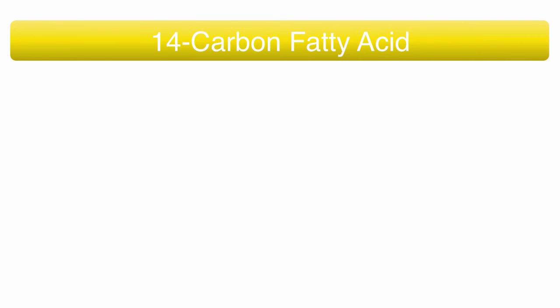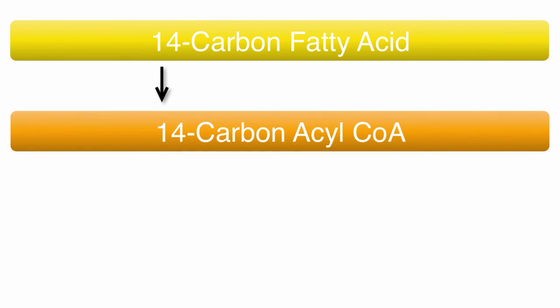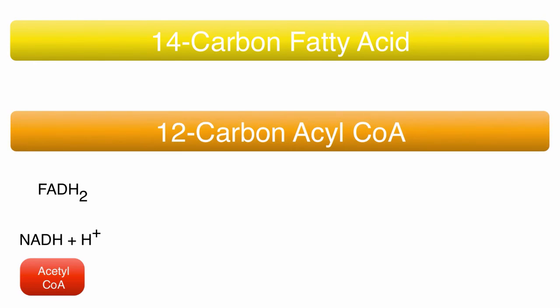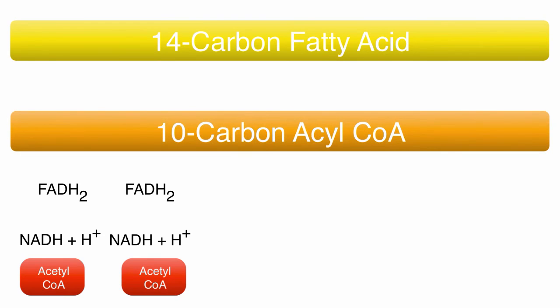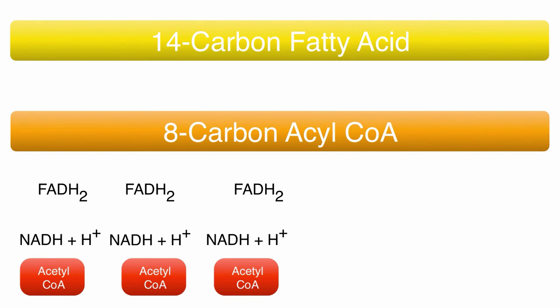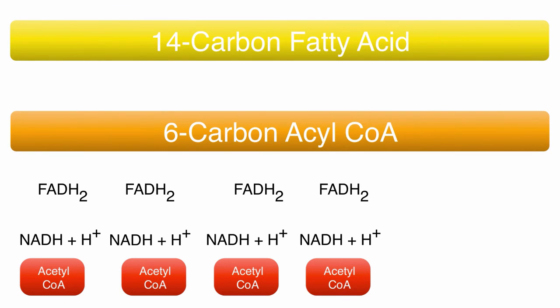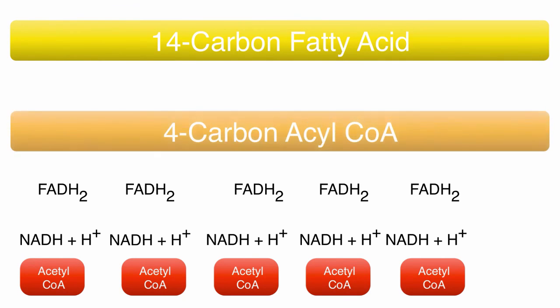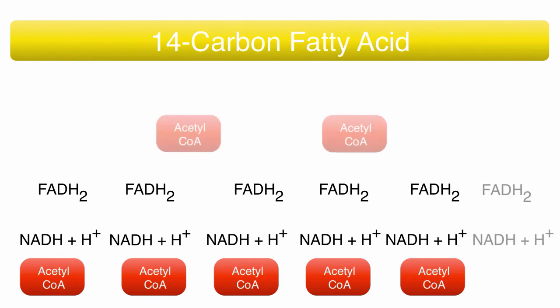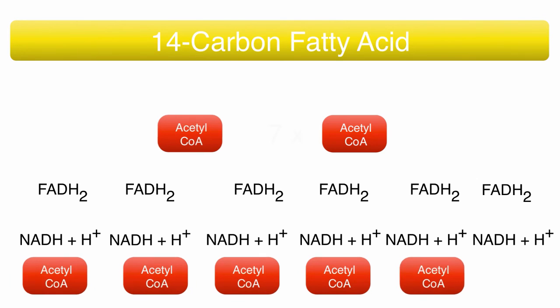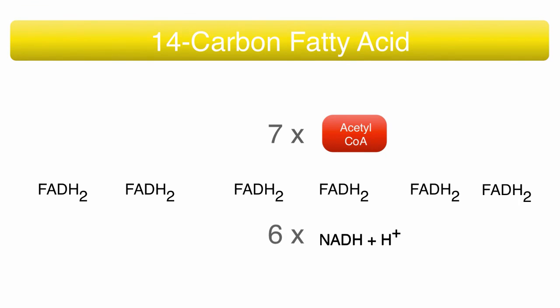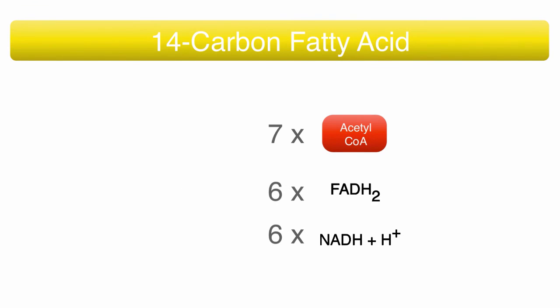Let's recap on the math with an example of a 14-carbon chain fatty acid. For each pair of carbons, the end result is one acetyl-CoA, making seven acetyl-CoA molecules total. However, this does not mean there are seven FADH2 nor seven NADH and H+ molecules. The reactions that create these hydrogen carriers do not occur for the last pair of carbons, because they automatically become acetyl-CoA during the split of a four-carbon acyl-CoA. So a 14-carbon chain fatty acid results in seven acetyl-CoA, six NADH and H+, and six FADH2.